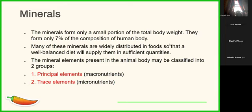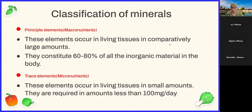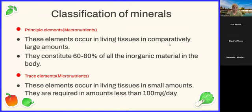There are two types of minerals: macro minerals and trace minerals. The principal macro minerals are required in your diet in an amount more than 100 mg per day — required in large amounts — and they constitute around 60 to 80 percent of all the inorganic material in your body. On the other hand, micro minerals like copper and selenium occur in living tissues in very small amounts and are required in amounts less than 100 mg per day.